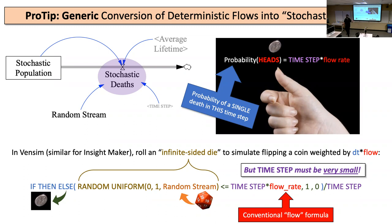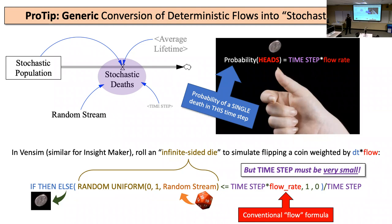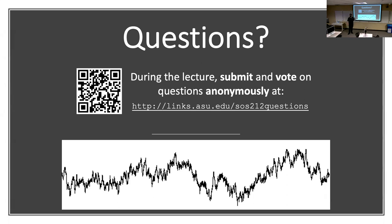VenSim is fundamentally a system dynamics tool, which is why the formula looks ugly. For heavy stochastic work, tools like ARENA or VIZIO are better — they're primarily or only stochastic, so you just give them probabilities without ugly formulas. I just want to give you an idea that this exists.